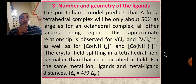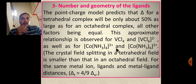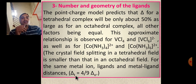The third factor is the geometry of the ligand. The point charge model predicts that delta for a tetrahedral complex will be about 50 percent as large as for an octahedral complex, all factors being equal. The crystal field splitting in a tetrahedral field is smaller than in an octahedral field for the same metal ion, ligand, and metal-ligand distance. The relationship is: delta tetrahedral equals four-ninths times delta octahedral.